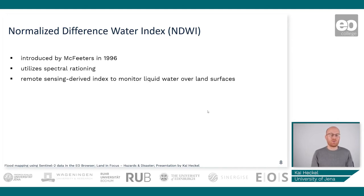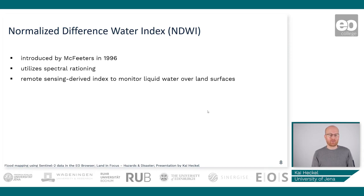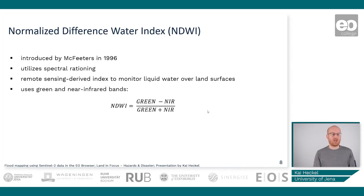This index can be used to monitor water bodies using remote sensing over land surfaces. Compared to the NDWI invented by Gao in the same year, this one uses the green band and the near infrared band. The Gao version uses the near infrared band and the short wave infrared band, making it more sensitive to vegetation moisture content. The equation is green minus near infrared divided by green plus near infrared — a typical normalized ratio.